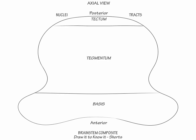Within the basis, draw the corticonuclear, also known as corticobulbar tracts, medially, which innervate the cranial nerves. Lateral to them, draw the corticospinal tracts, which provide motor innervation to the body.